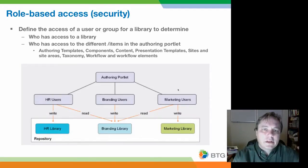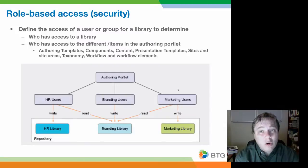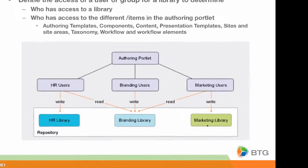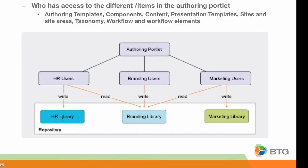Another area of control that you have on libraries is security or role-based access. You can set a certain access to the library as a whole, then go down into the library and set access for the various items within it. For example, if you set up a marketing library, a branding library, and an HR library, with corresponding user groups — marketing users, branding users, and HR users — you can set it up so that marketing users can read from the branding library but can only edit, change, and create things in their own marketing library. This also means that when branding users come into the authoring portlet, they see only the things that are relevant to them in their role, and the same for marketing users.